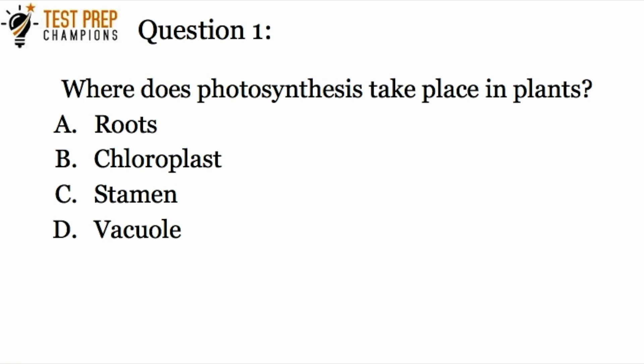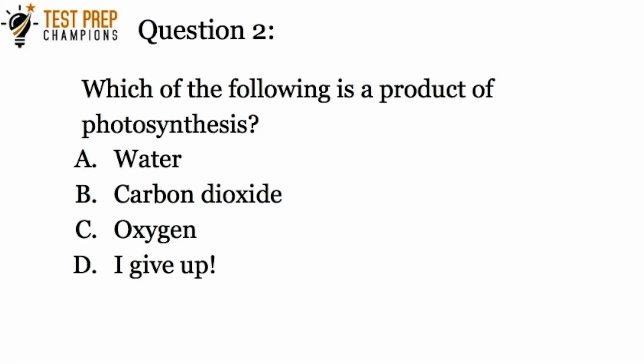Now let's do some practice questions. Question one: where does photosynthesis take place in plants? Go ahead and think about it — you can pause the video or rewind to re-watch if you're not sure. The answer is B, chloroplast. Just remember that photosynthesis takes place in the part of the plant called the chloroplast.